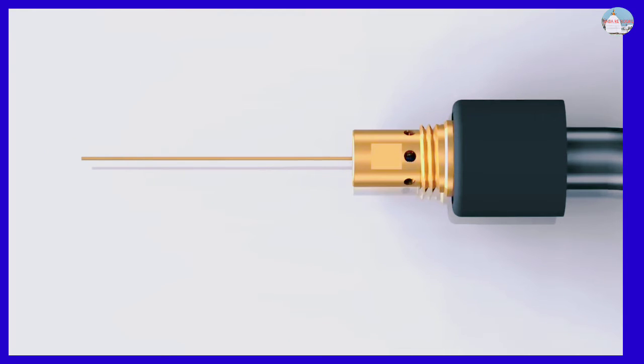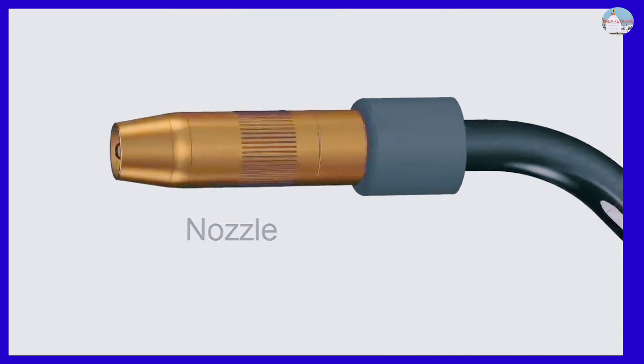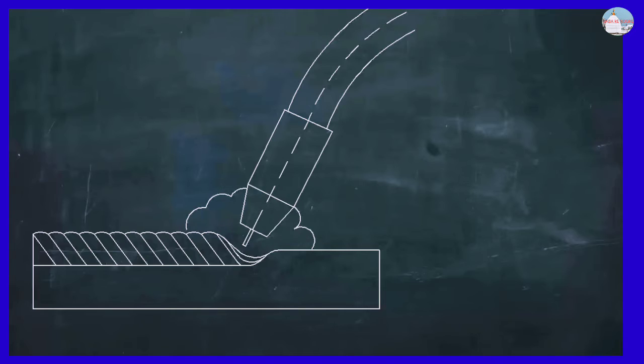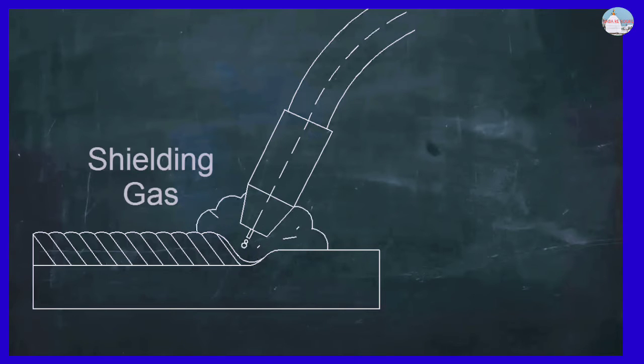Shielding gas is also fed through the welding lead. It goes through a gas diffuser and flows out of the nozzle. This shielding gas, which is often a mix of argon and CO2, protects the molten metal from reacting with oxygen, water vapor, and other things in the atmosphere.